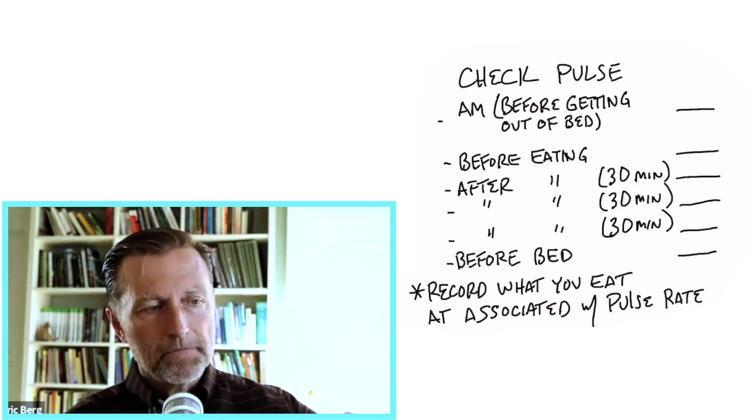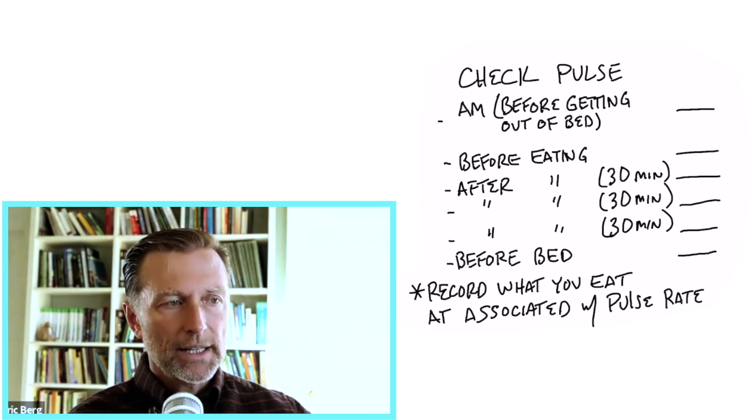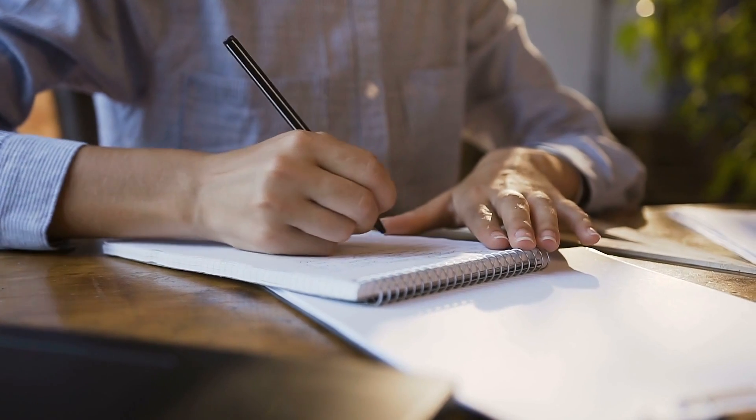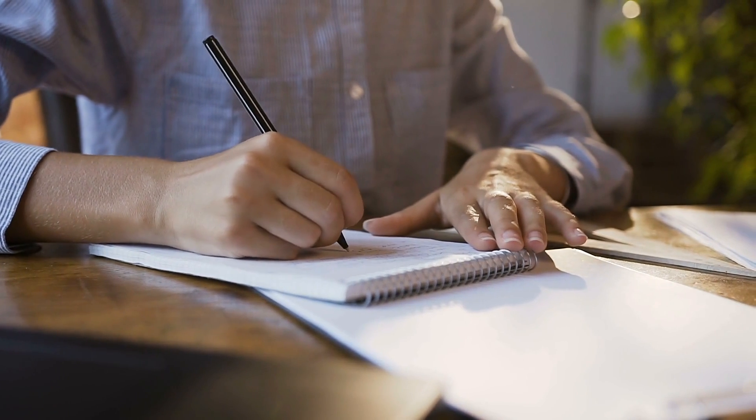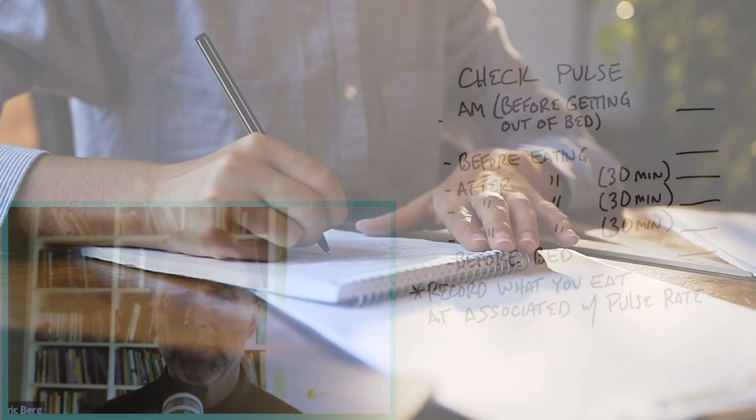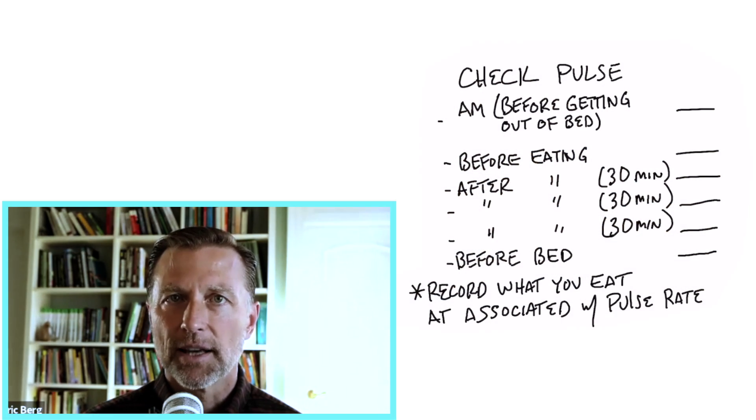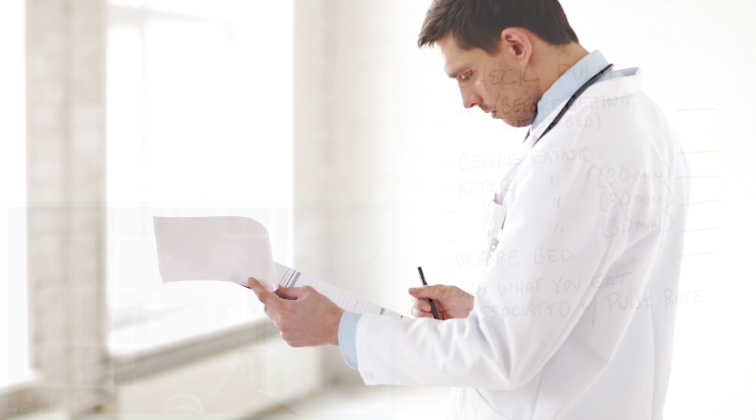And so with that information, you want to also correlate it with your eating. And so we want to make sure that we write down all the things that you ate right next to this pulse rate. I mean, this is very obvious stuff. Your pulse rate went up. What did you eat just before that? Could there be an allergy?